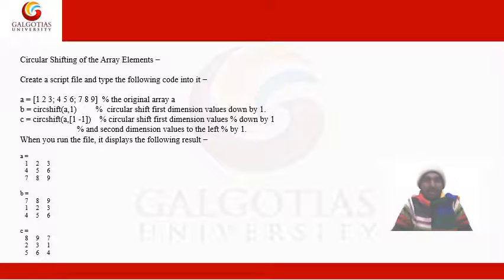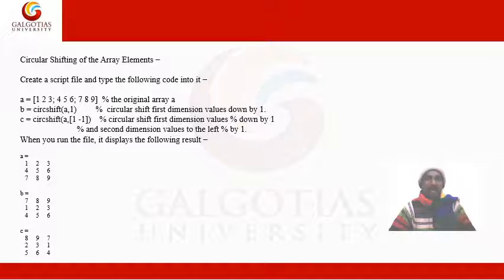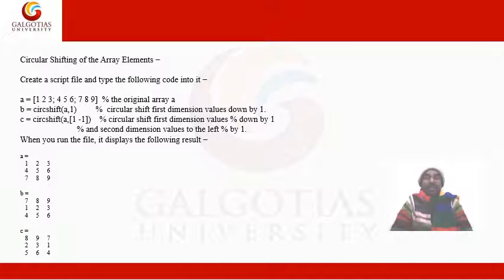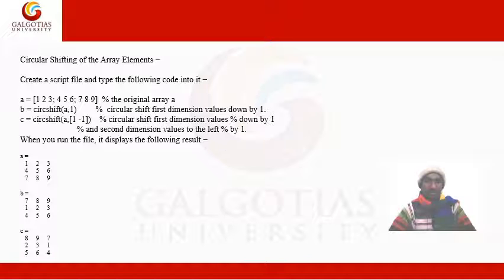For circular shifting of array elements, we use the circshift() function. For example, circshift(a, [1, -1]) shifts the first dimension down by 1 and the second dimension to the left by 1.